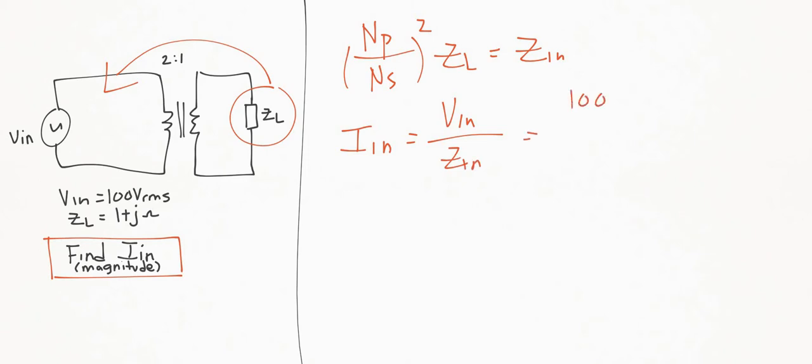When we plug these numbers in, we get 100 divided by... N_P over N_S is 2, squared is 4...